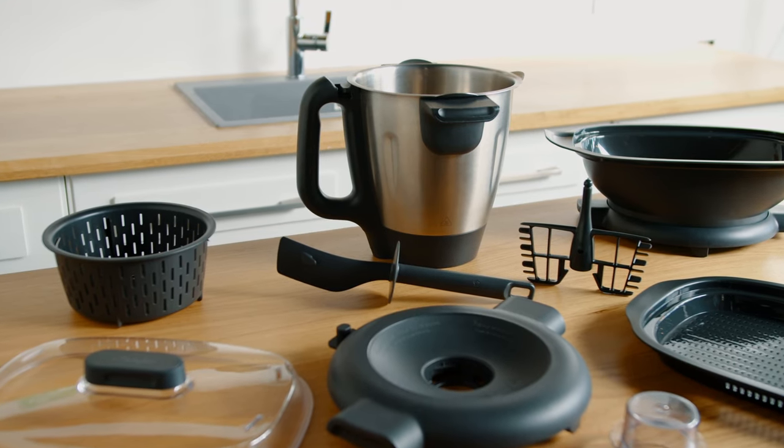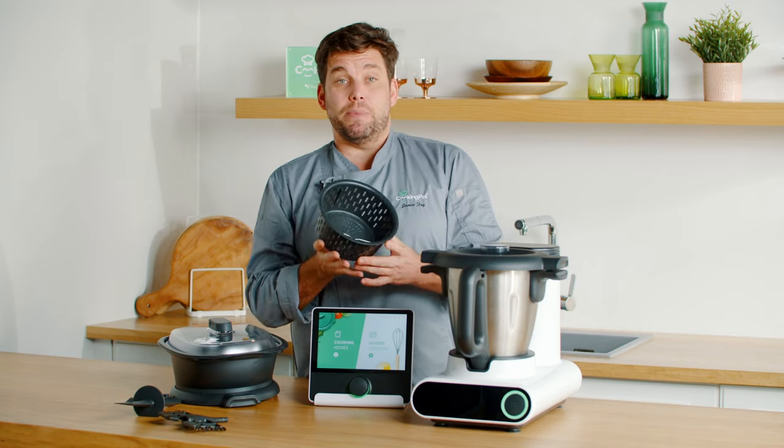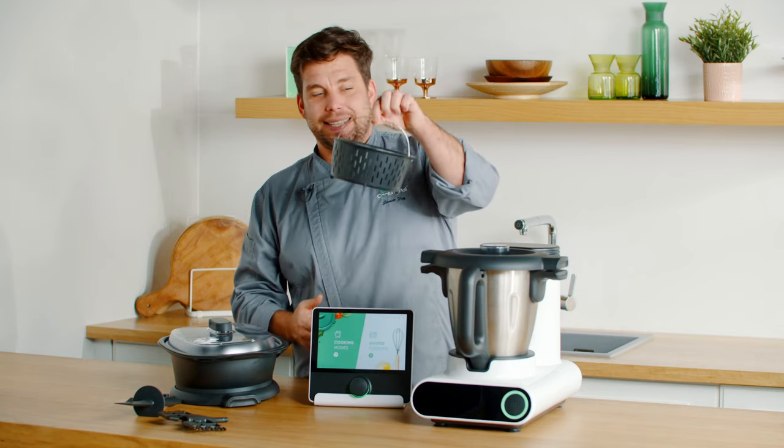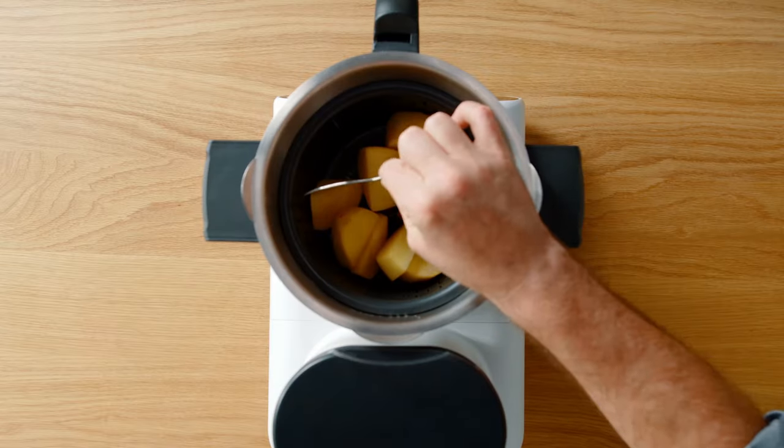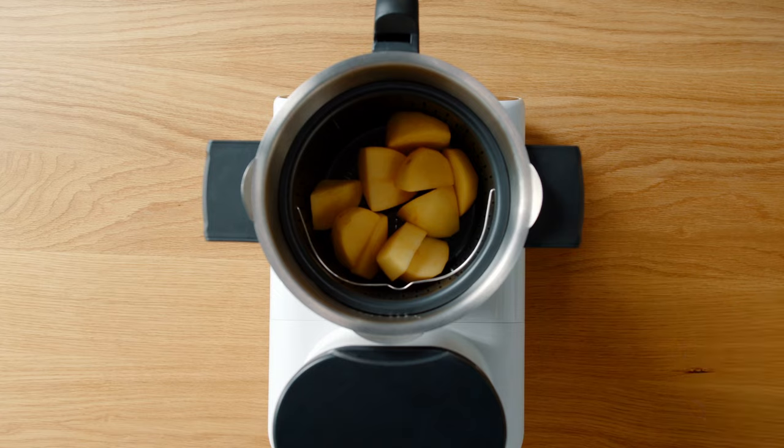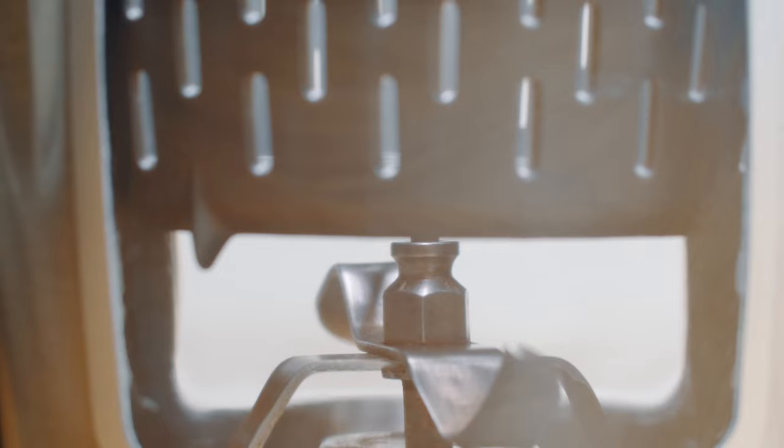So now you know about the main unit and the bowl and also the hub. We're going to deep dive now into the accessories and show you each one of them. This is our simmering basket. With our simmering basket, it's designed to drop inside of your bowl and allows you to cook rice, pasta or potatoes.